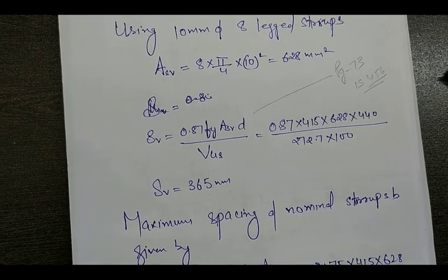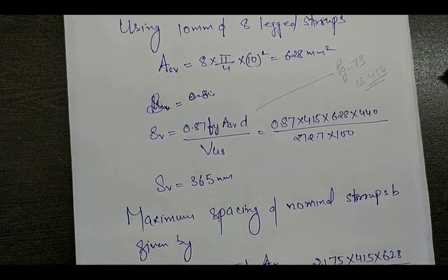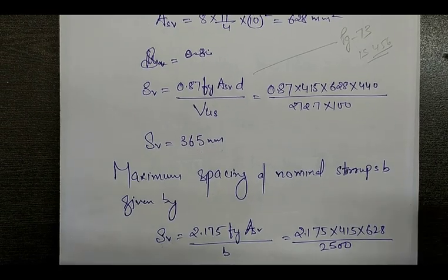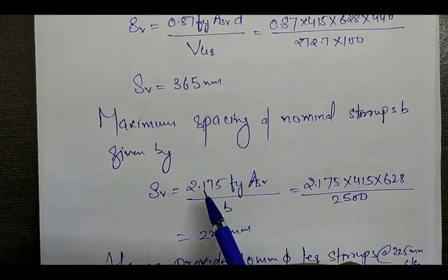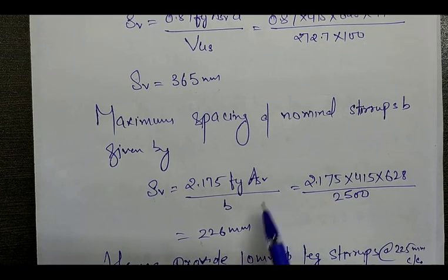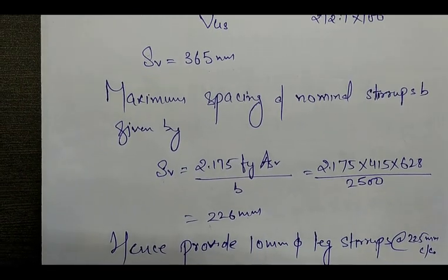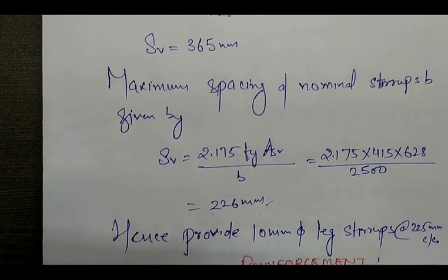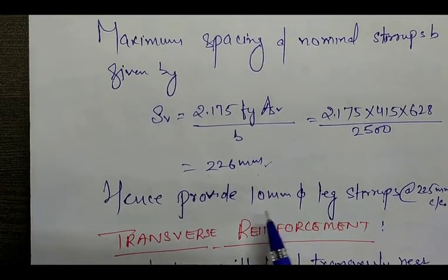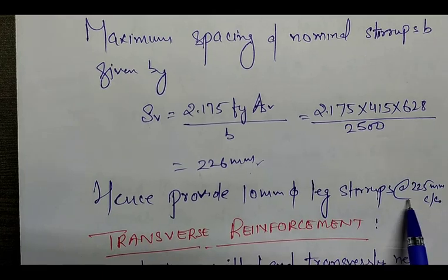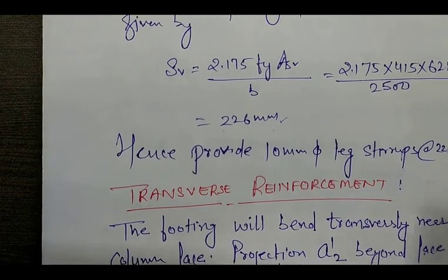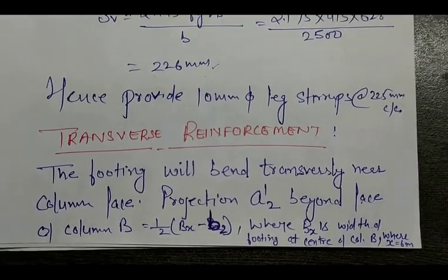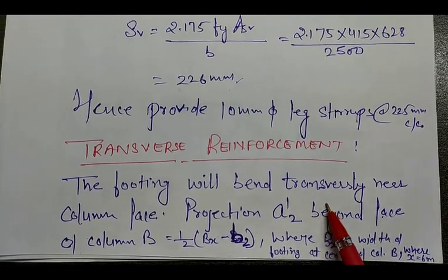The calculated spacing is 356 mm per IS 456 Clause 73, but the maximum center-to-center distance is limited to 300 mm. Recalculating with the formula gives a maximum of 226 mm, so we adopt 226 mm. Hence, provide 10 mm diameter stirrups at 225 mm center-to-center.